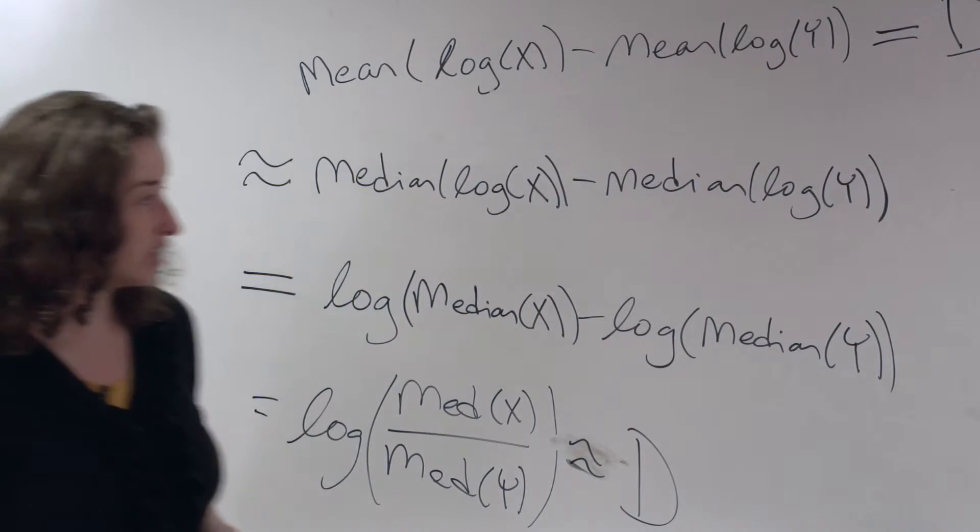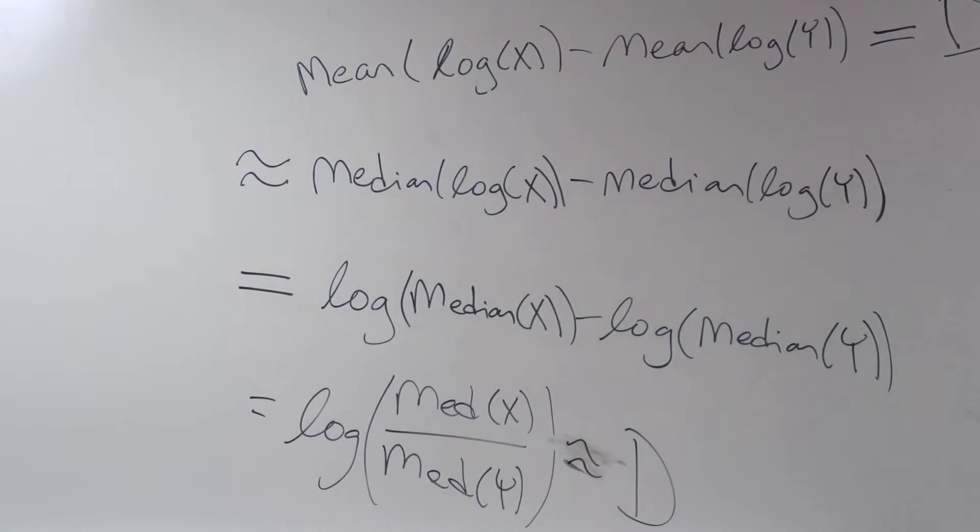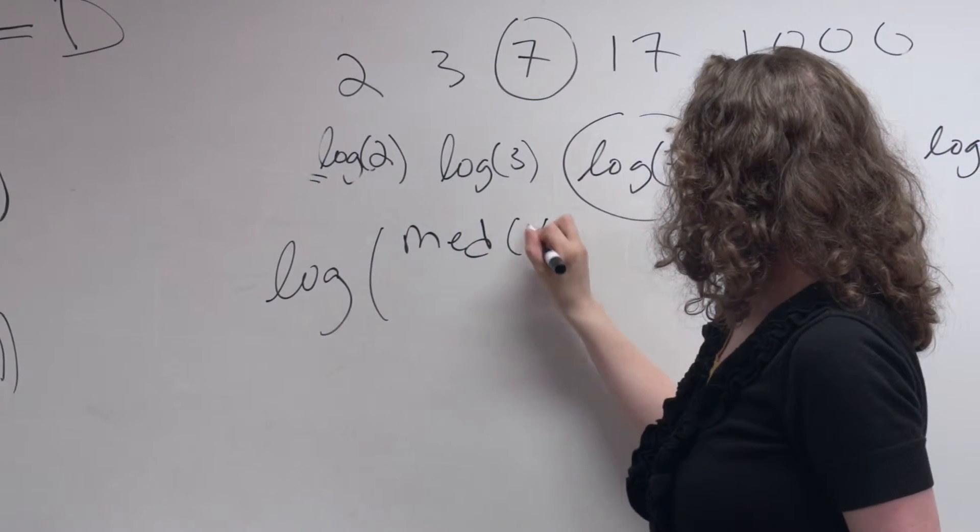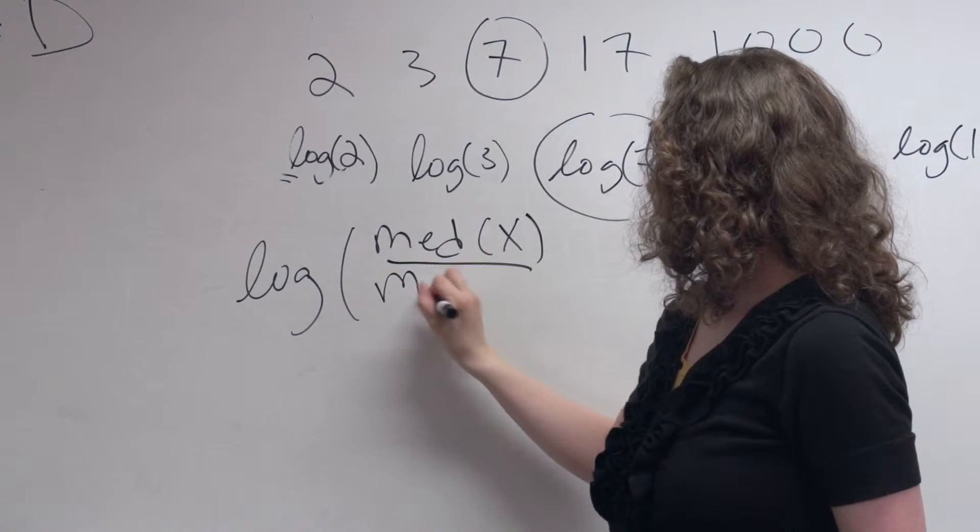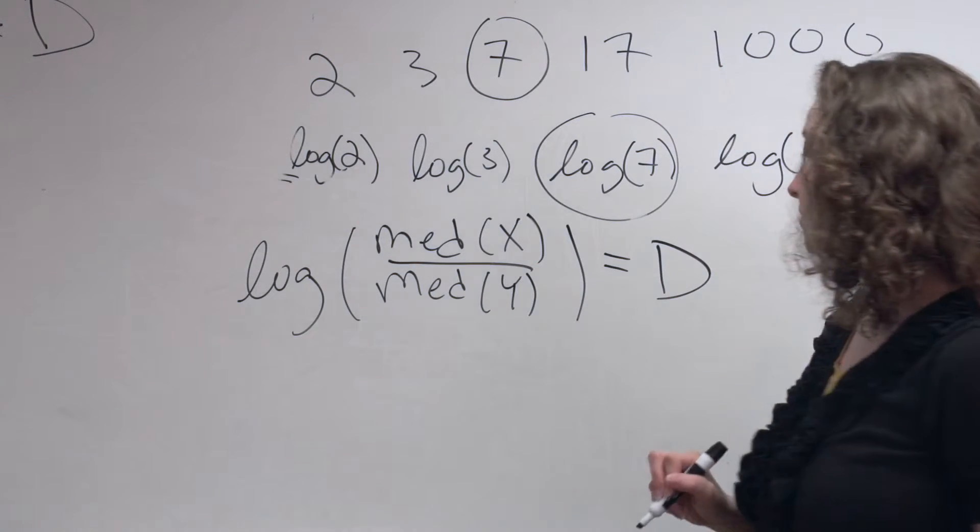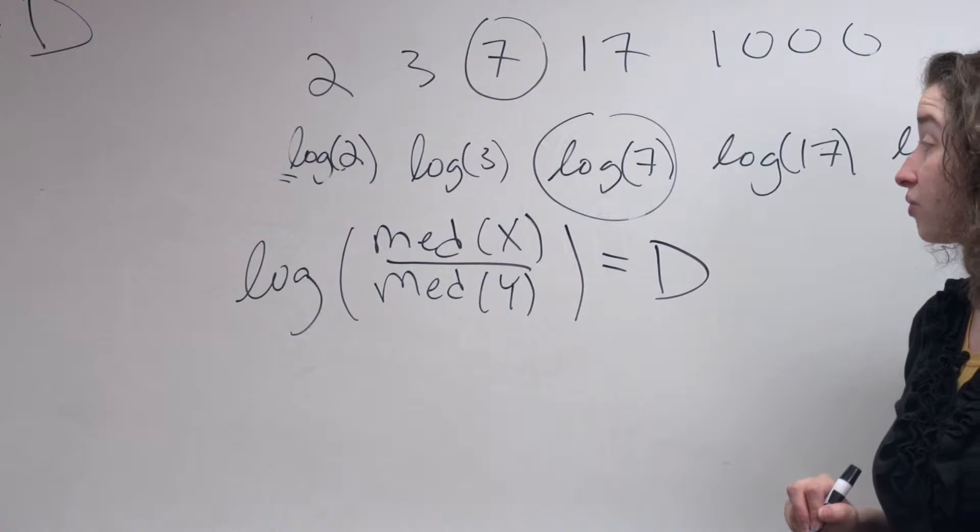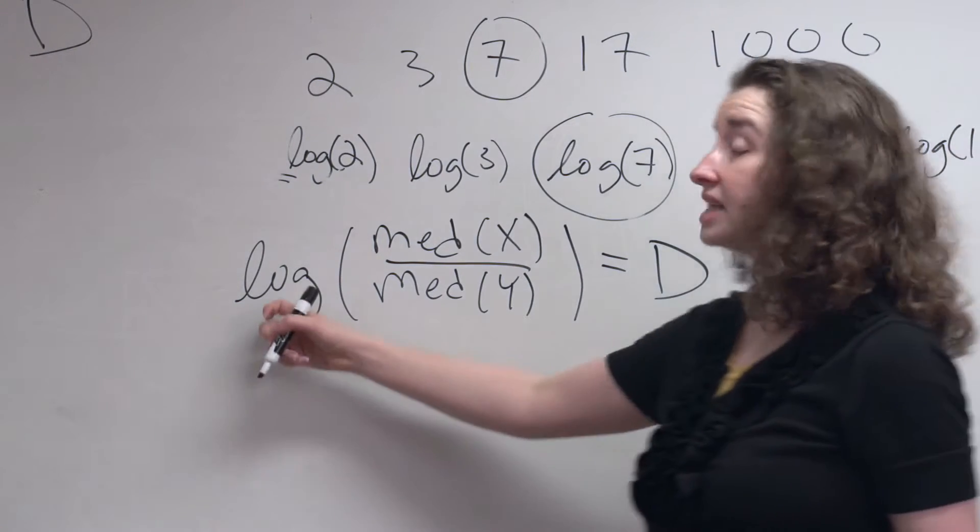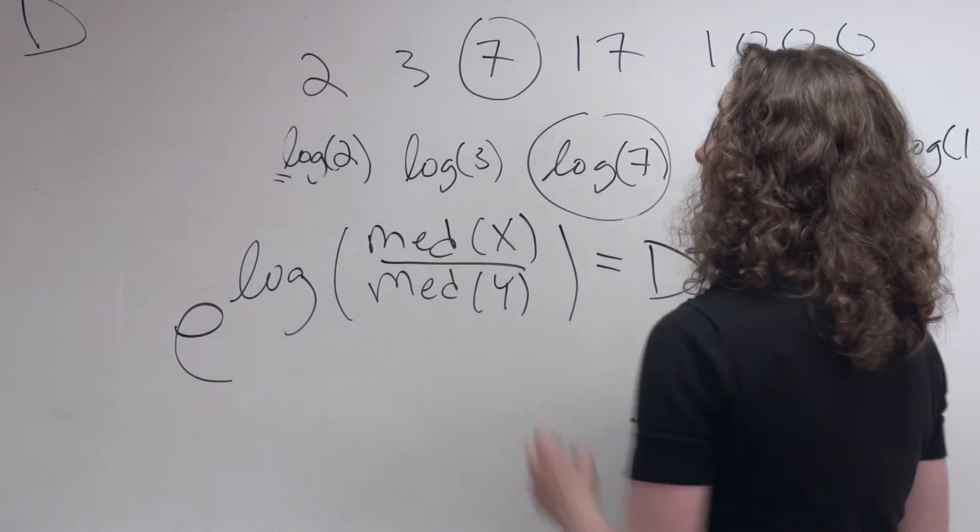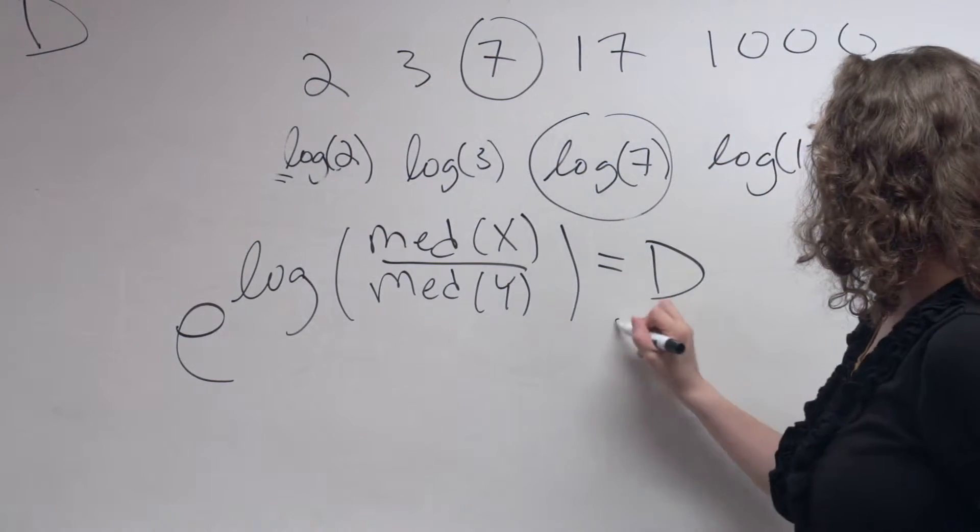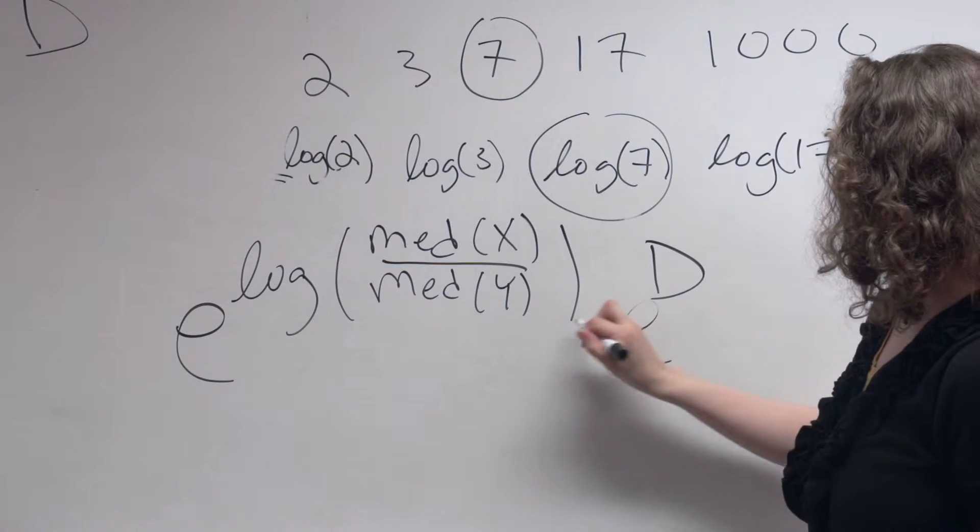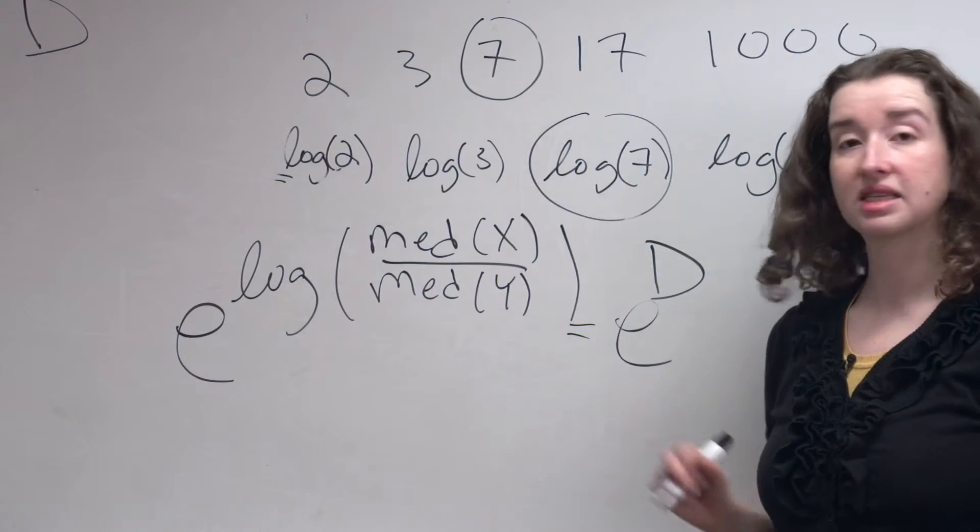Let me write this same equation over here so that we can manipulate it. So what did we end up with? Again, the log of the ratio of the medians. And we're saying that that's equal to some particular number, approximately. It's approximately equal. What I'm going to do now, because I took the log with base e, I'm going to take e to the log median x over median y. And also e to the power d, whatever that number is. And this statement is also true, because I did the same thing to both sides.